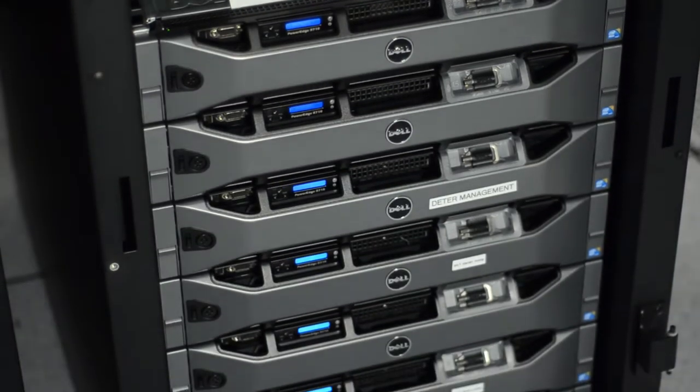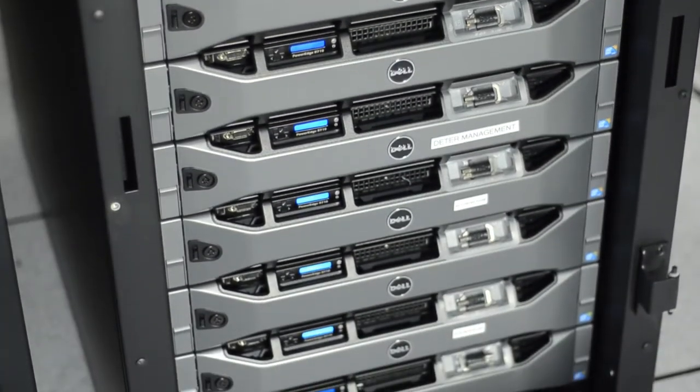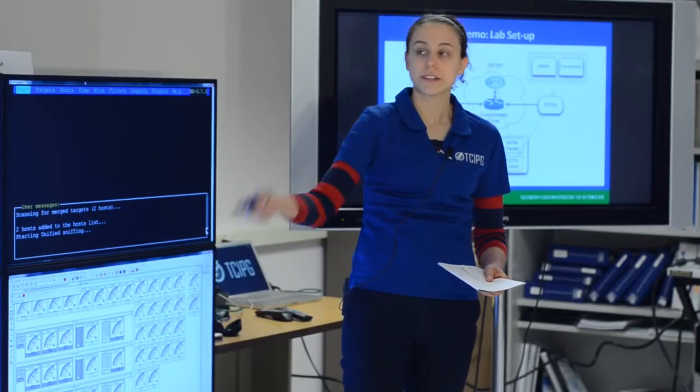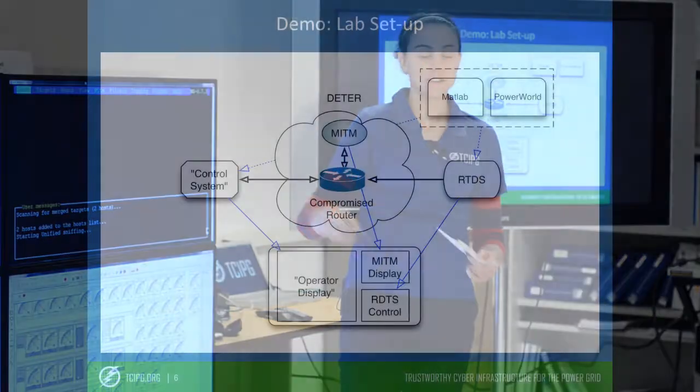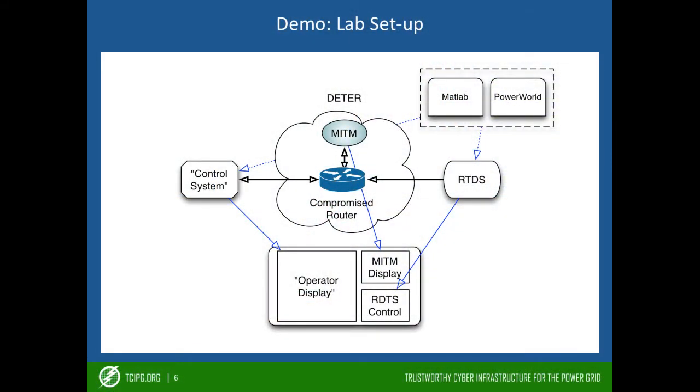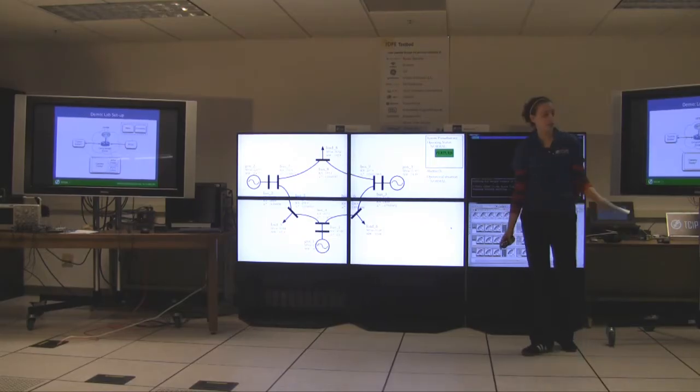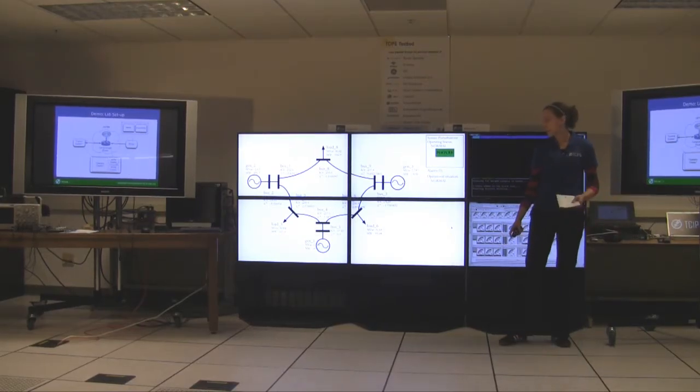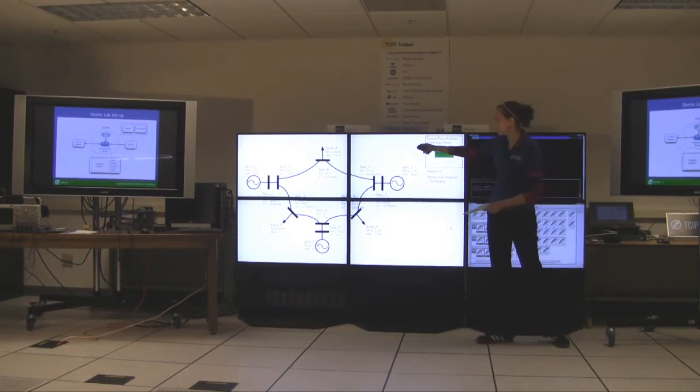And inside this DETER experiment setup, we have a node that's pretending to be the adversary who's launching a man-in-the-middle attack and spoofing this data that we talked about at buses 6, 4, and 9. And then on the other side of DETER, data comes out and goes to our control system, which is what the operator would see, which is this display right here.